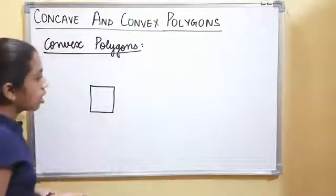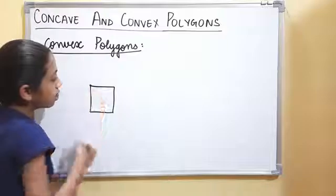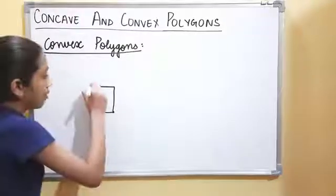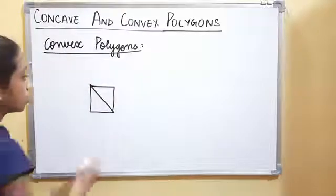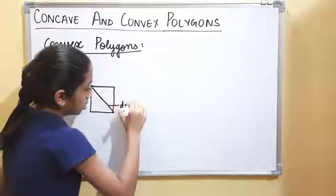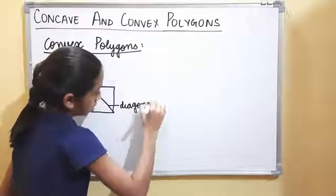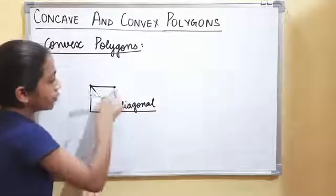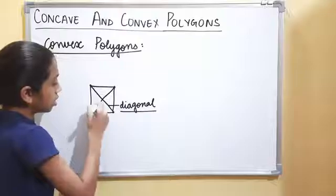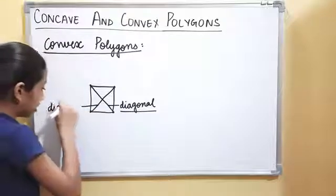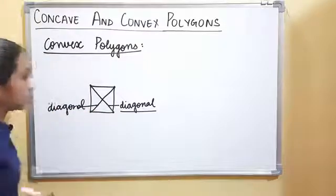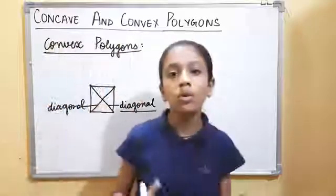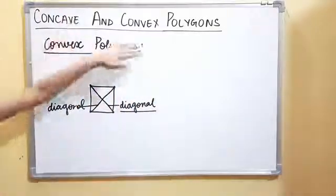Let's take an example. The diagonal of this vertex goes to this other vertex, and we draw it inside the polygon like this. Similarly, the diagonal of this other vertex is drawn inside like this. So both diagonals lie inside the shape — that is what makes it a convex polygon.